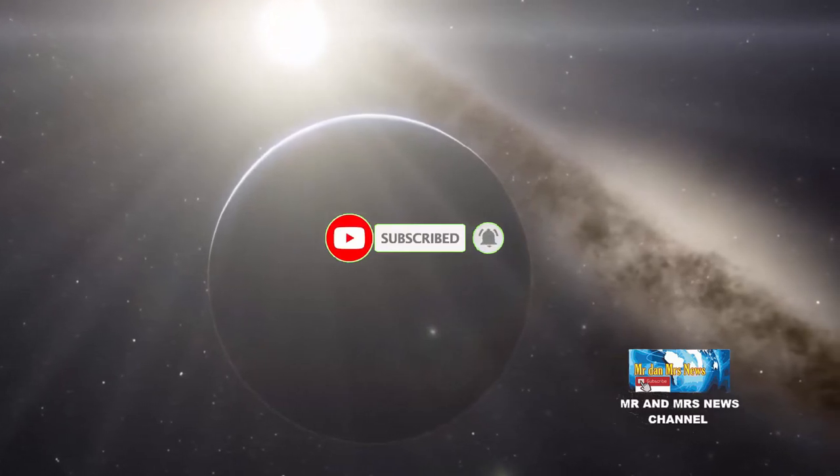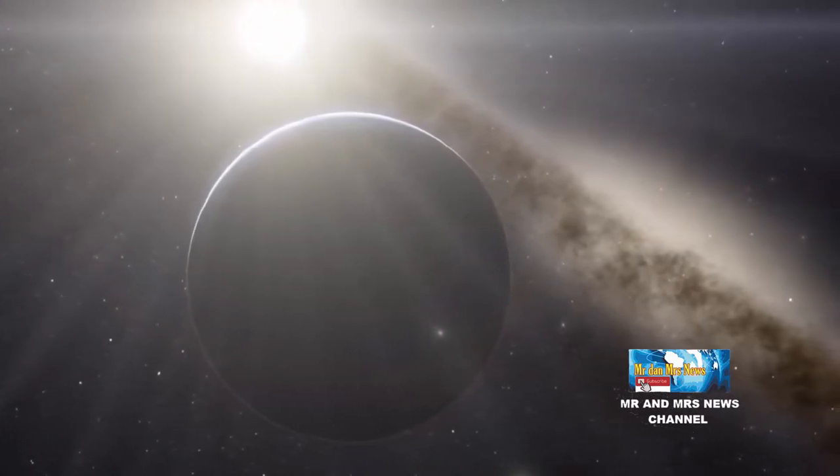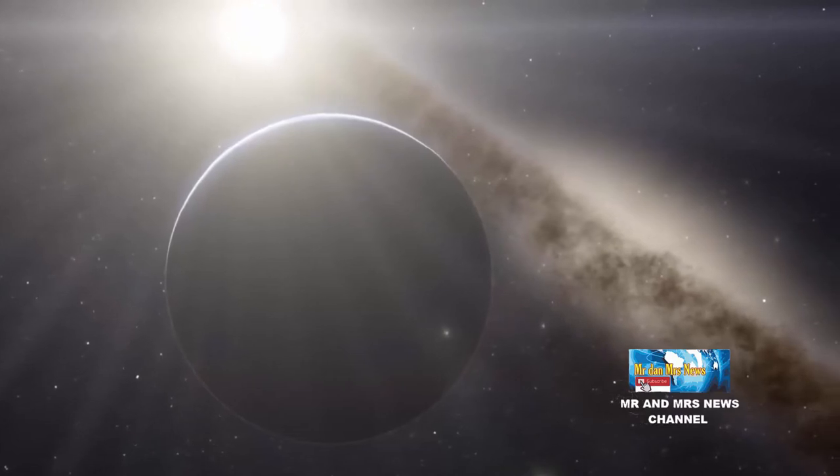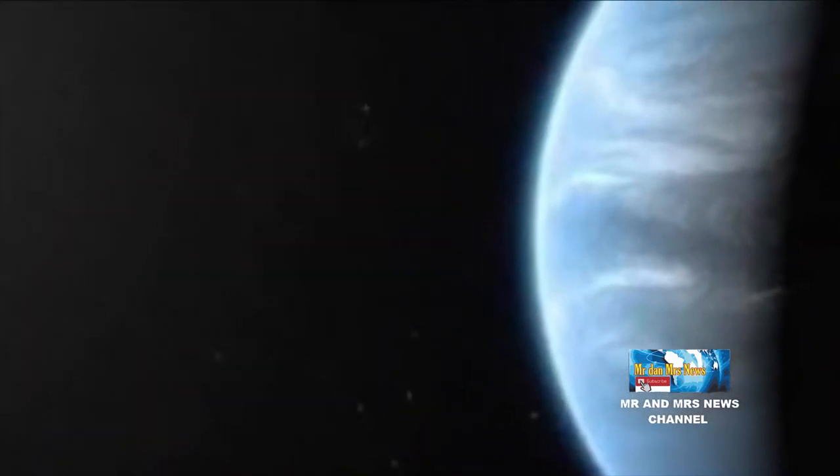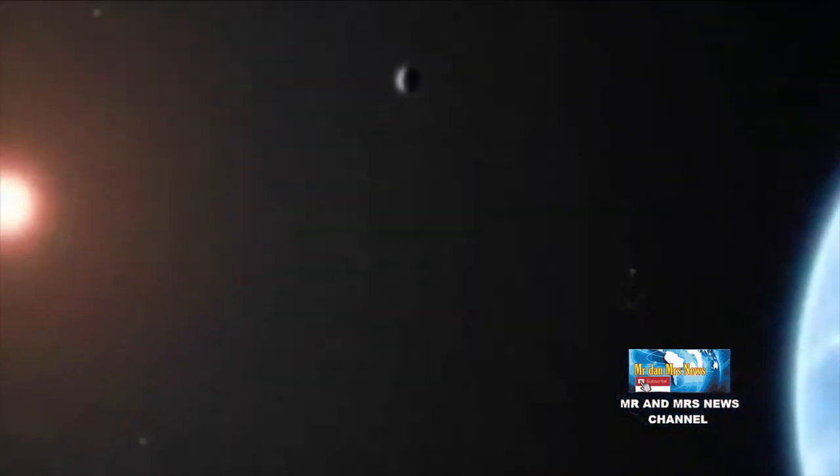Selain itu, ada kemungkinan planet itu memiliki awan tinggi di atmosfernya serta bukti adanya air. Kepadatan rendah TOI-1231B menunjukkan bahwa planet dikelilingi oleh atmosfer yang substansial.